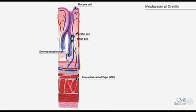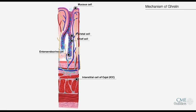Within the muscle wall are specialized cells called the interstitial cells of Cajal, or ICC, as well as enteric nerves, branches of innervating nerves, and others along the stomach wall and a blood vessel.